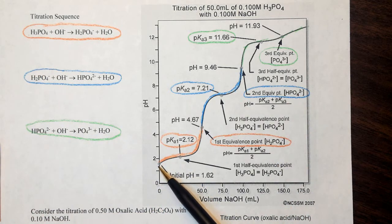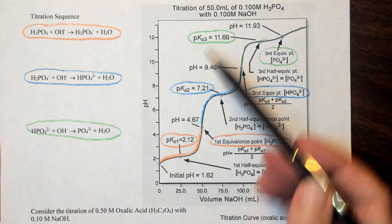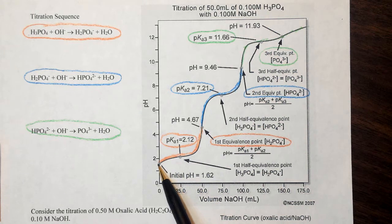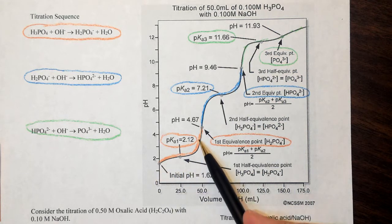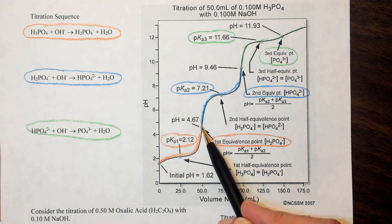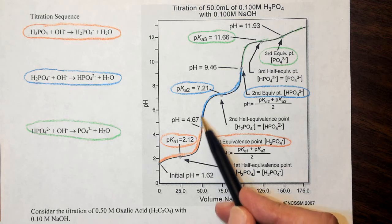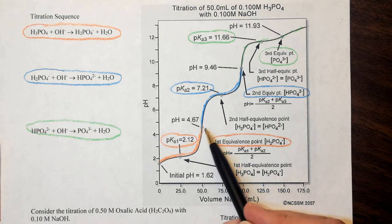There's our initial pH of 1.62, even though it's 0.1 molar, and that's because we're at an equilibrium here. As we go through the titration, our first equivalence point will be right here. If we are using an indicator, we'll see a color change. If we're using a pH meter, we're looking for the steepest point in the curve.